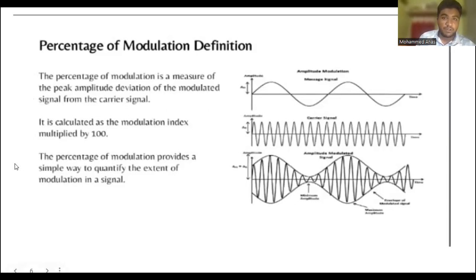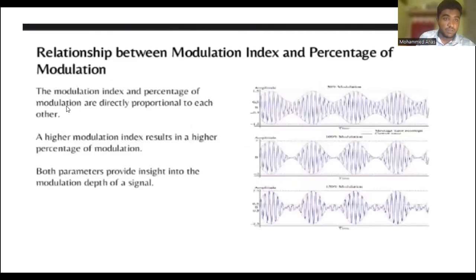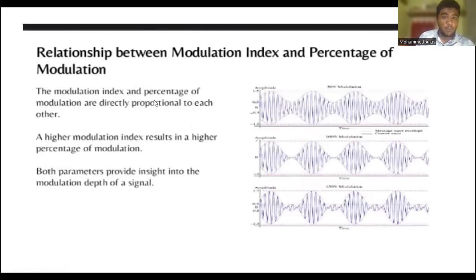The relationship between modulation index and percentage of modulation: the modulation index and percentage of modulation are directly proportional to each other. A higher modulation index results in a higher percentage of modulation. Both parameters provide insight into the modulation depth of the signal.